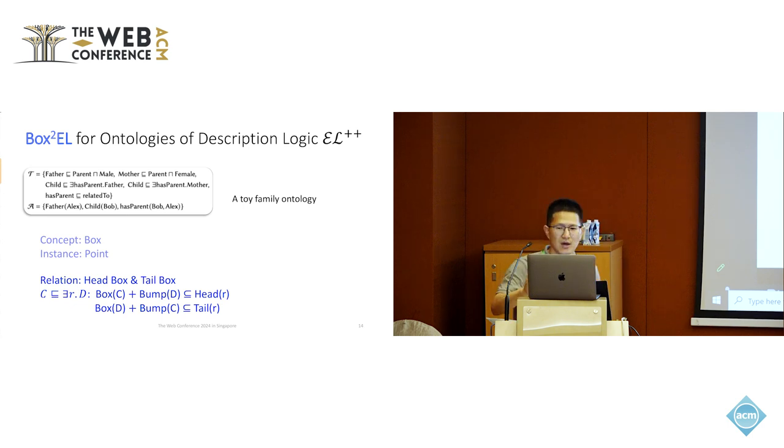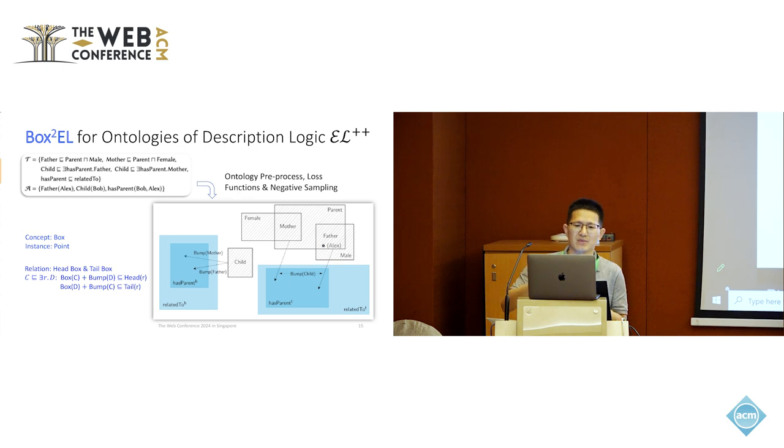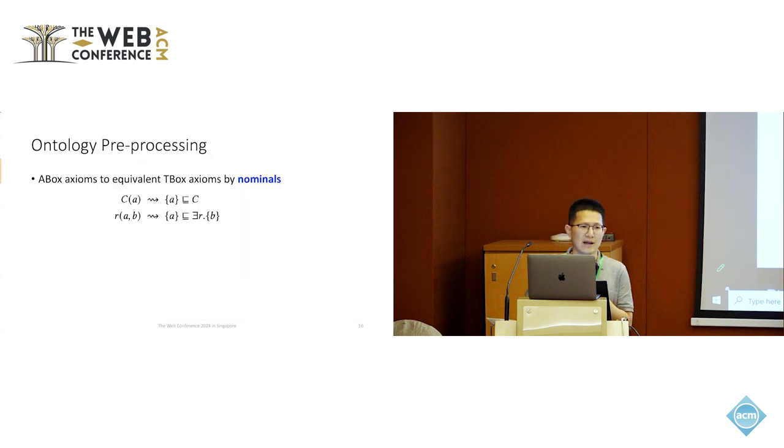To get this representation, we need optimization and learning algorithms. We need these steps. First, we need to pre-process the ontology. One step is we need to transform the A-box axioms into equivalent T-box axioms using nominal. The instance A is represented as the nominal concept of A, so we can transform the membership into subsumption and the role assertion into existential quantification. The second step is normalization. We use existing reasoners to normalize all the complex axioms into basic forms. In EL++ ontology, we can normalize all axioms into six forms.